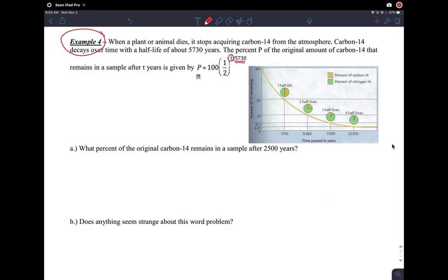They're saying half-life is 5,730 years. T here is measured in years, time in years. And then P is the percent of original carbon that remains. So percent of remaining carbon.